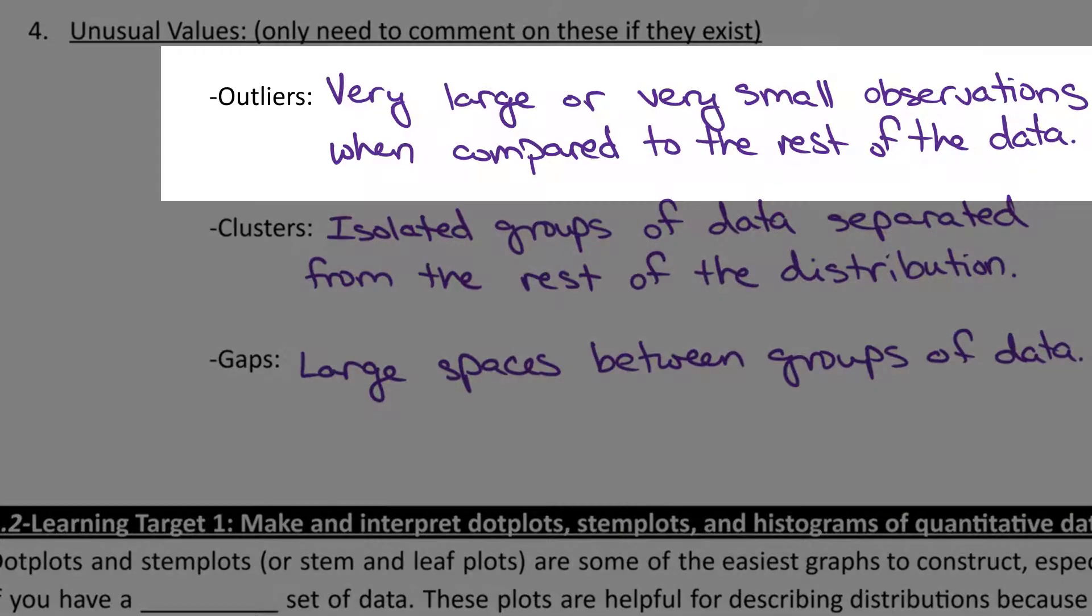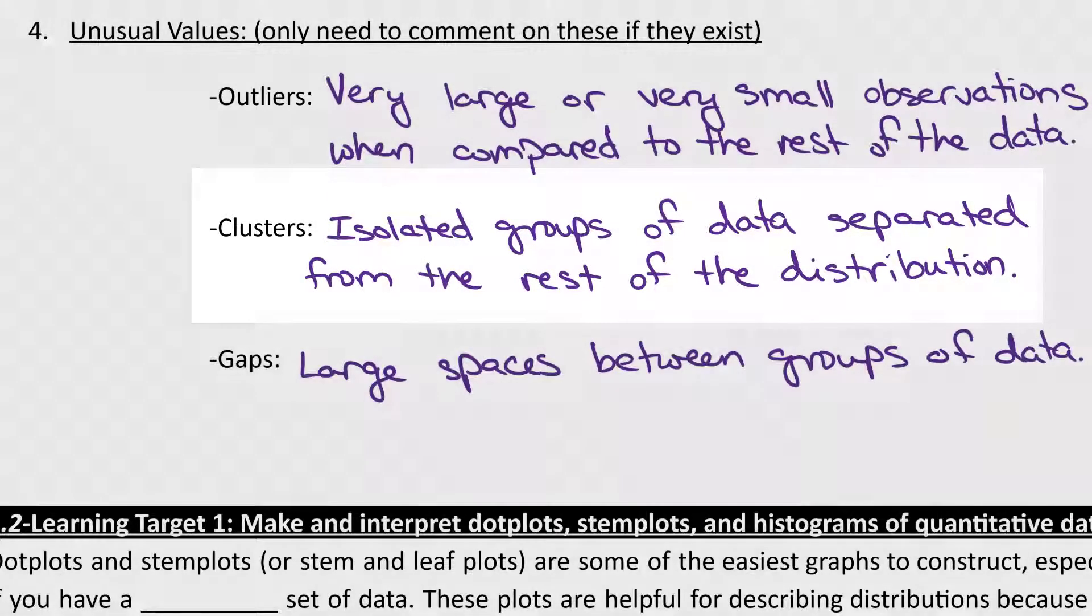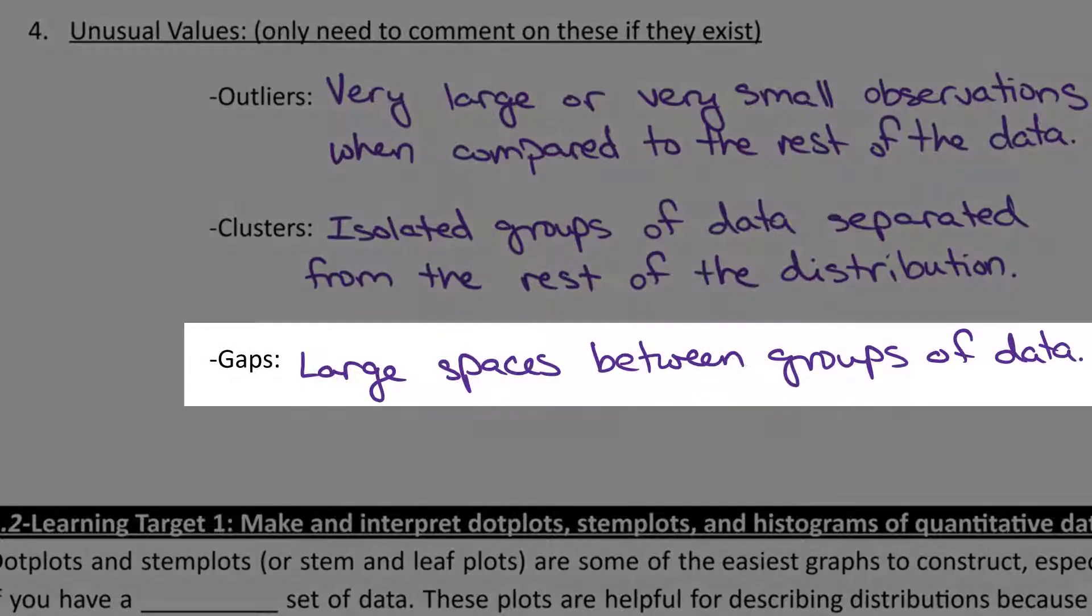Outliers are very large or very small observations when we compare them to the rest of the data. Clusters are when we have isolated groups of data that are separated from the rest of the distribution. And gaps, well, that's what they say, these are large spaces between groups of data.